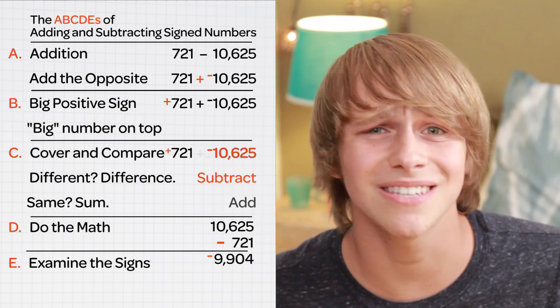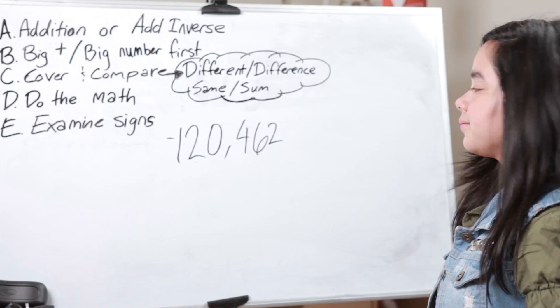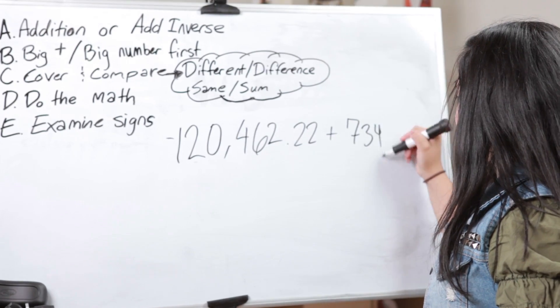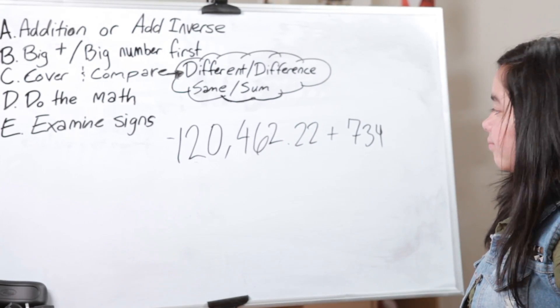Right now we're going to show you how to take some insanely huge numbers and make it seem like nothing. Let's do negative 120,000... 462.22 plus 734. Okay, so we've got A — Addition or additive inverse. We have an addition sign, so we are good to go. We move on to B.